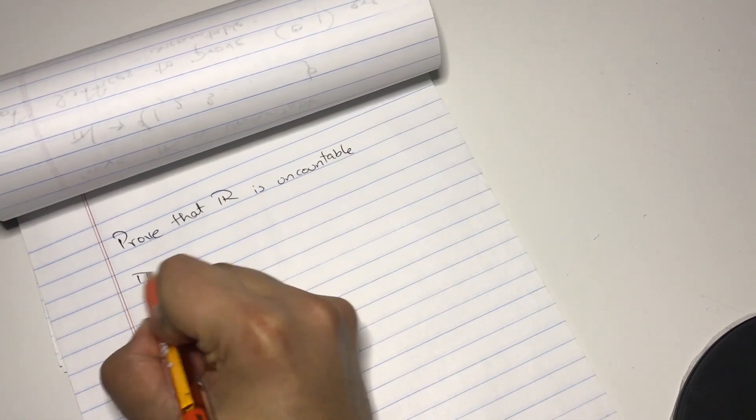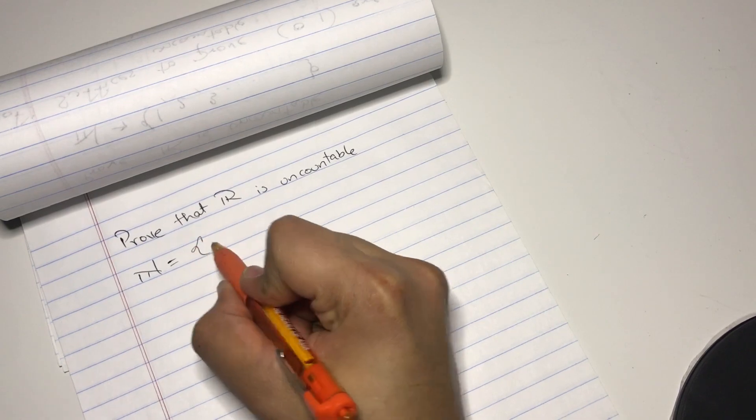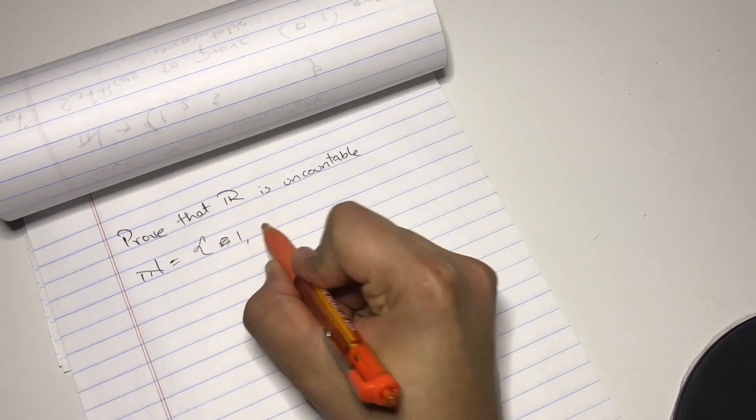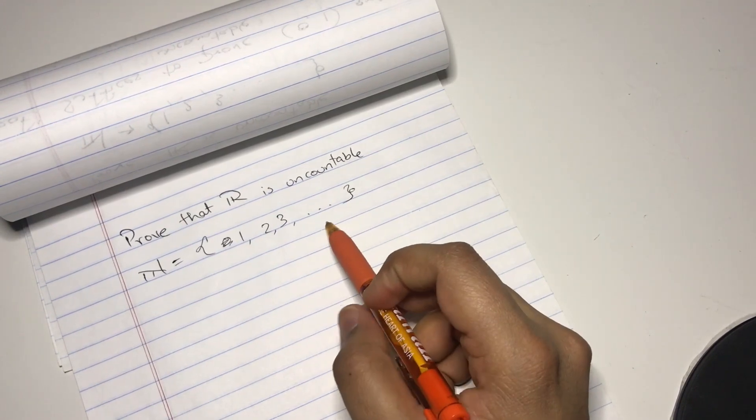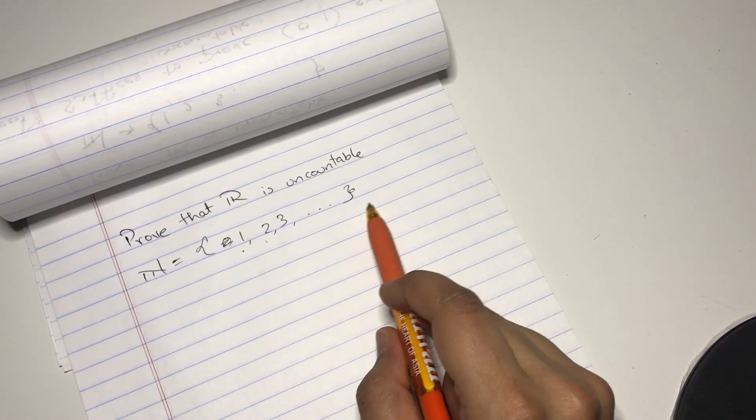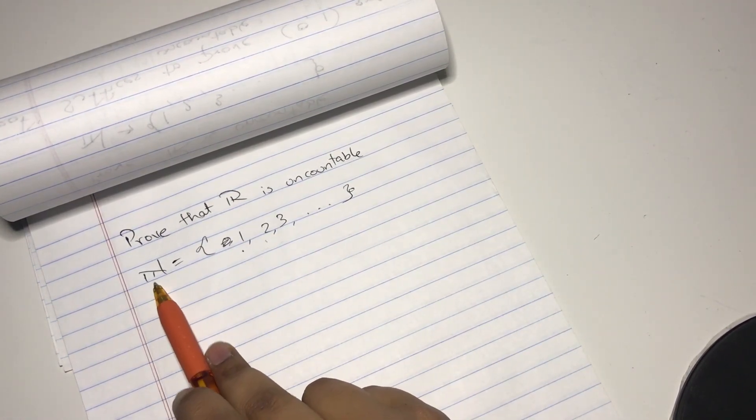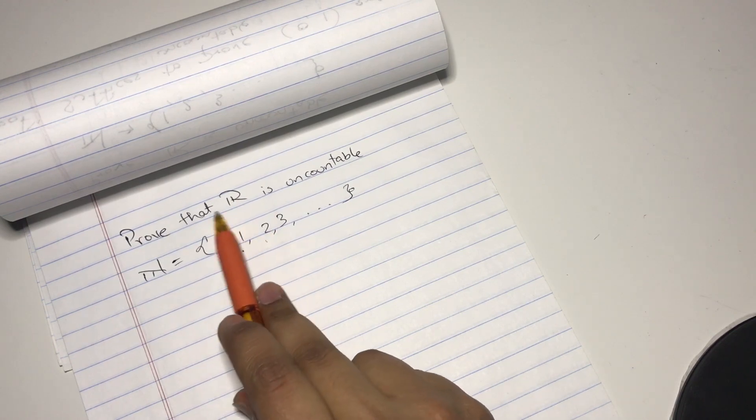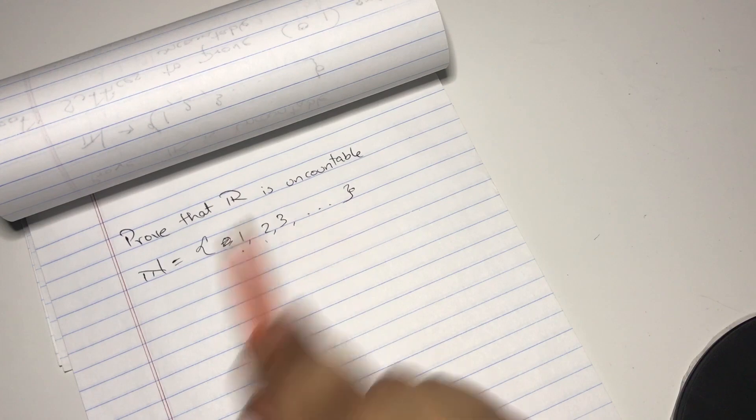Let's say we have a countable set such as the set of natural numbers, which is 1, 2, 3, so on and so forth all the way to infinity. That is countable. I could count the one, I could count the two, and I could go on and hypothetically reach infinity. So the set of natural numbers is countable, but we want to prove that the set of all real numbers is not countable.